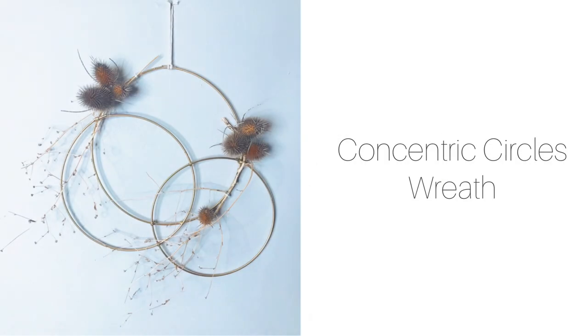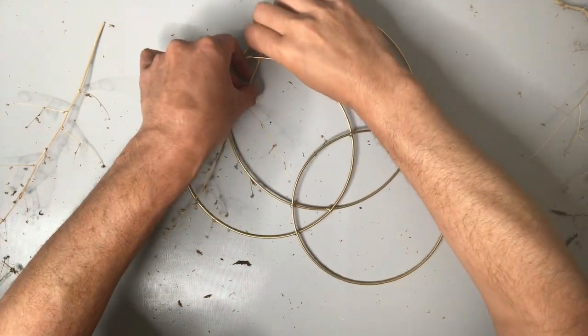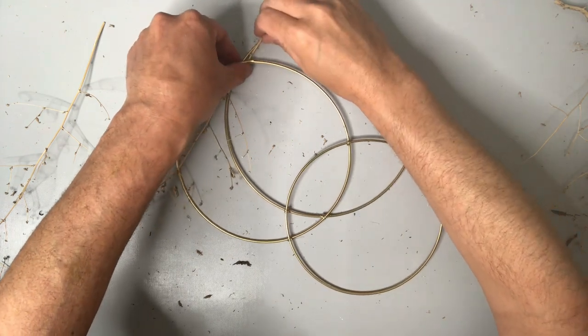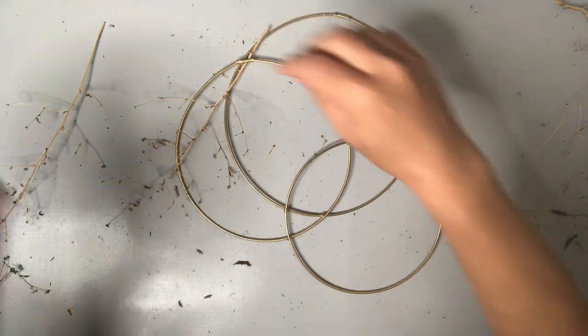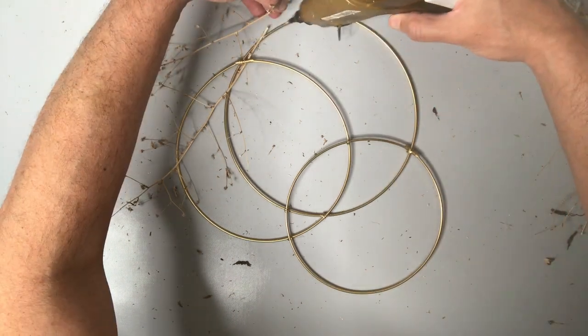Our first project is a concentric circles wreath and now I'm just going to add all of that beautiful dead stuff that I collected on my walk with my dog. Here you can see that I've got some of those branches that I've cut and now I'm just going to attach them to our wreath form, just kind of placing them first to see where I want them to fall.